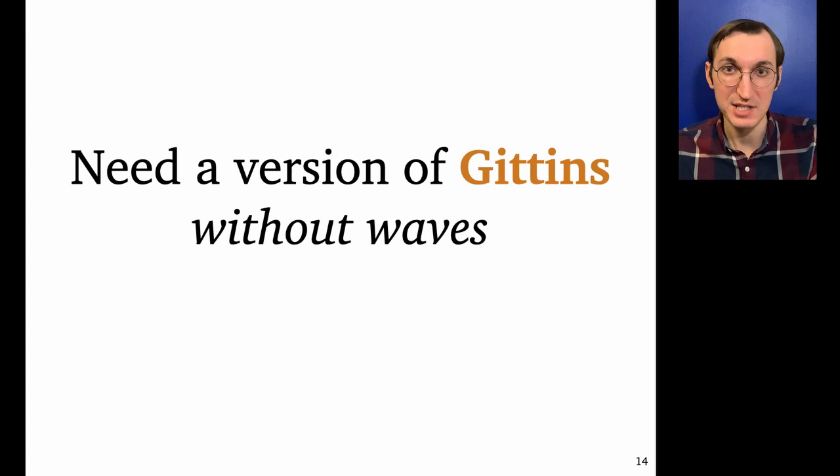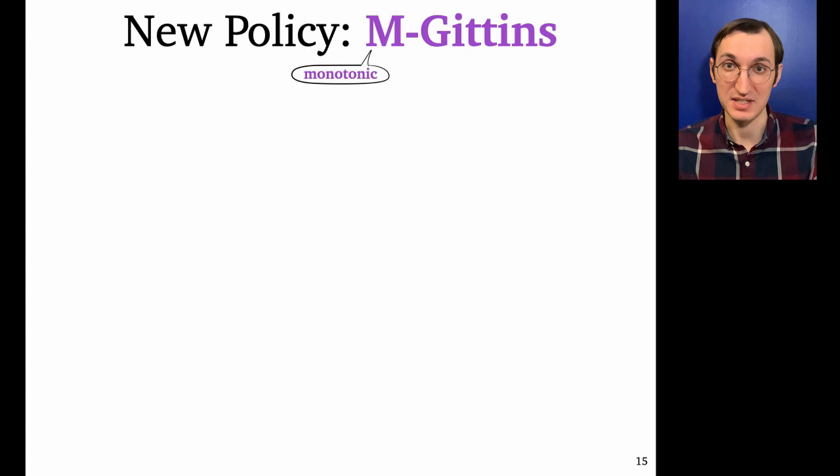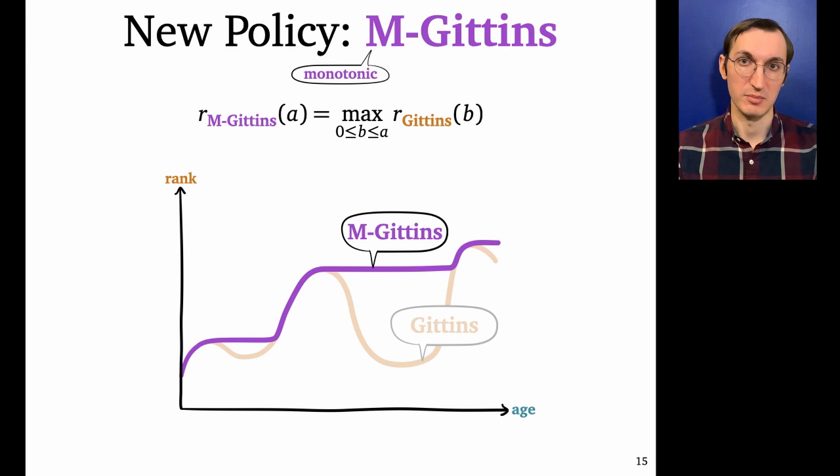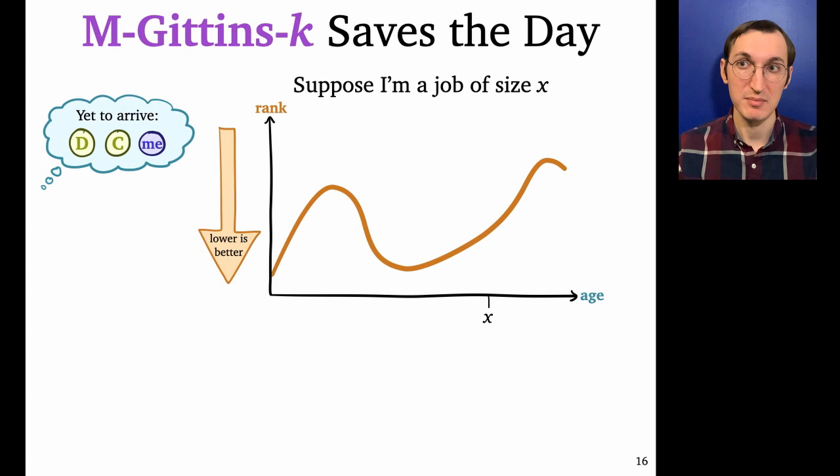And so what we need is a version of the Gittins rank function that doesn't have waves. And that's what M-Gittins is. So the M-Gittins policy, it stands for monotonic Gittins, is defined similarly to Gittins. It also uses a rank function, but we change it slightly. If this is the Gittins rank function, the M-Gittins is a version that never goes down. Here's the formula. It's defined using a running maximum.